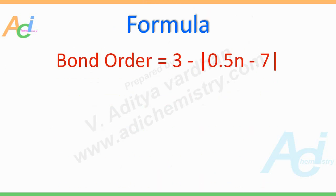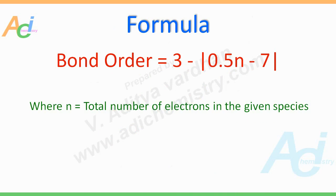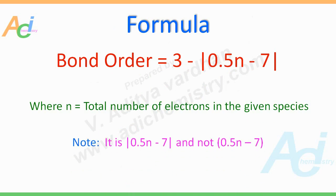Just use the following formula to find out the bond order. Bond order is equal to 3 minus modulus of 0.5N minus 7, where N is equal to the total number of electrons in the given species. Note that it is the modulus of 0.5N minus 7, and not simply 0.5N minus 7.